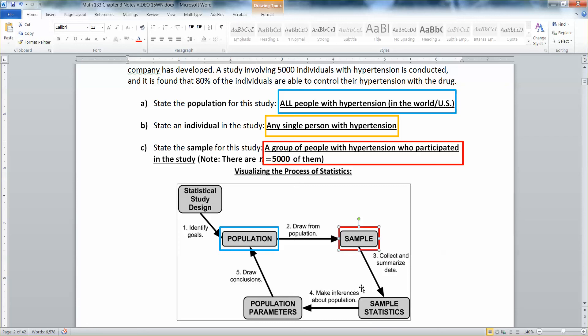And then from there we go to a population parameter. We say, okay, well, if 80% of the sample did okay, then we bet about 80% of the population will do okay. And therefore we should put the drug on the market. And that's where you draw the conclusion.